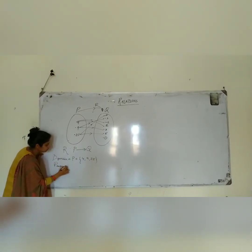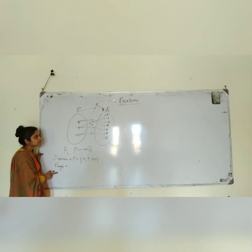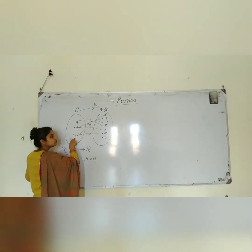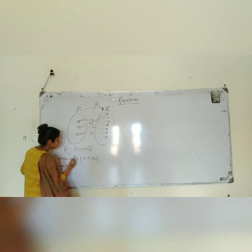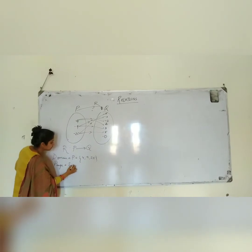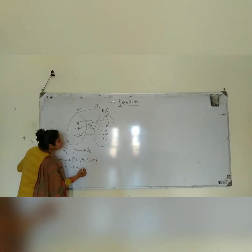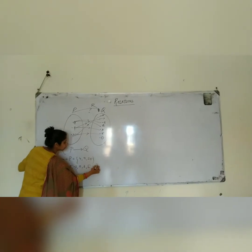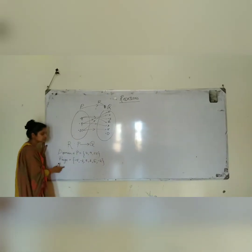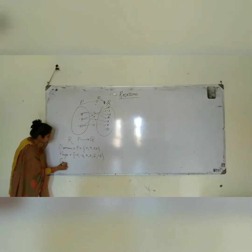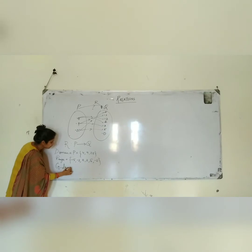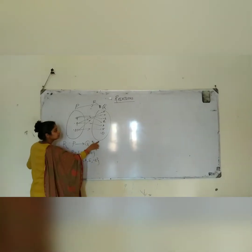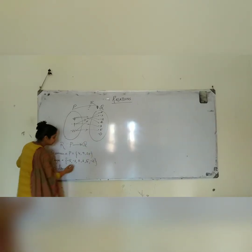What is the range? The range is called the set of those elements which are matching with the domain set. So the range is minus 5, minus 3, 2, 3, 5, and minus 3. And the co-domain is the total set, that is Q.